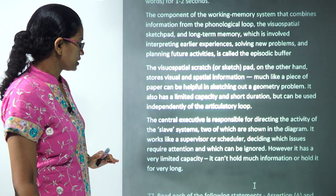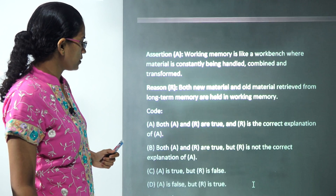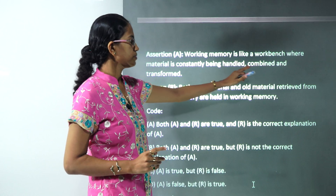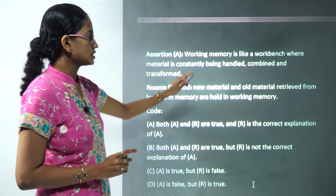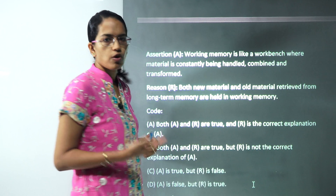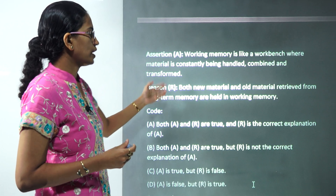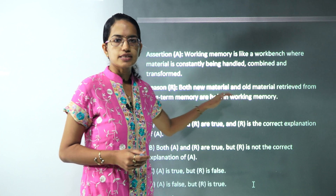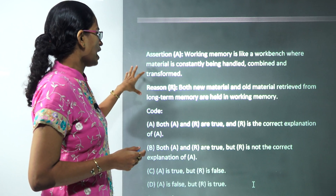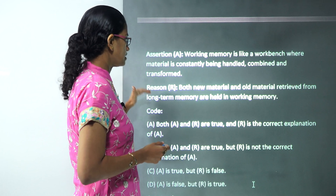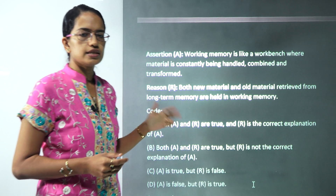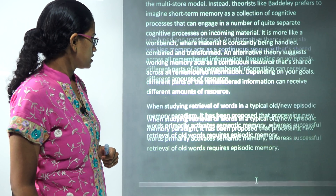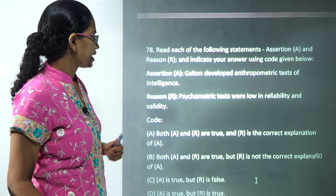The next question is an assertion-reason type. Working memory is like a workbench where material is constantly being handled, combined, and transformed — that's correct. Both new and old material are retrieved from long-term memory and held in working memory — that's a correct explanation. Both assertion and reason are correct, and reason correctly explains the assertion.